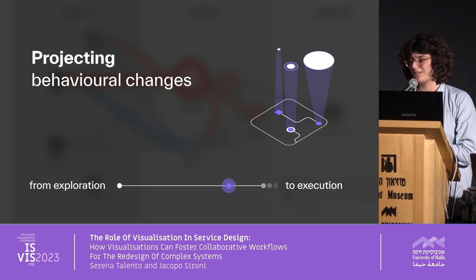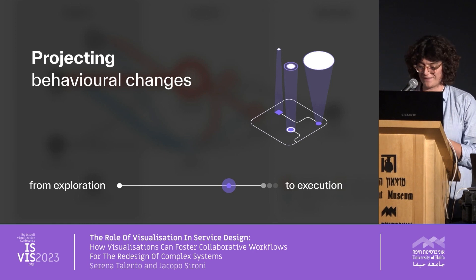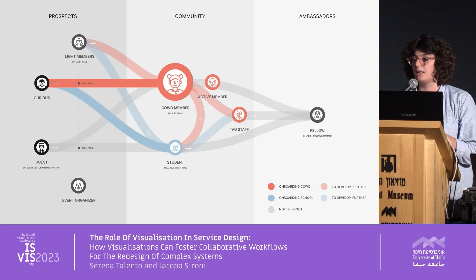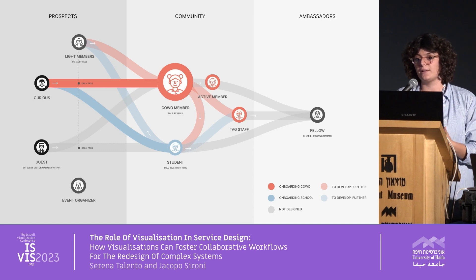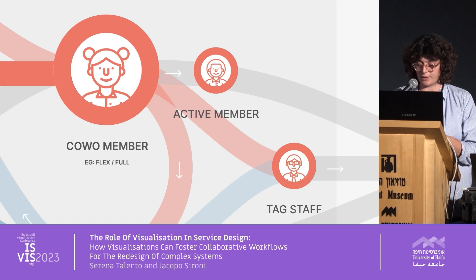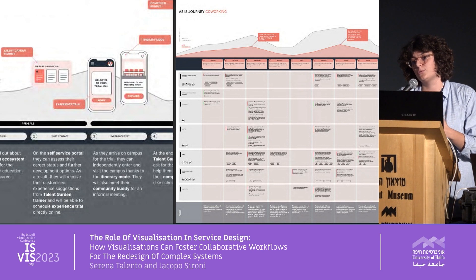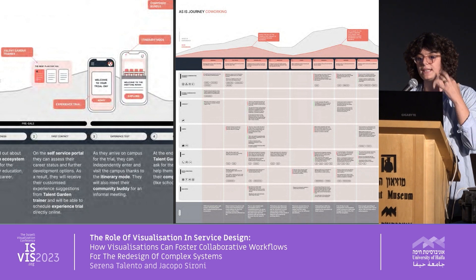Another step forward toward implementation is when we have defined the general service strategy but need to understand how users need to change their behavior to fit the new service. Here, for example, we have a map depicting a learning community, and we can see how students arrive as prospects and can become fellows and experts. The connections are extremely important because they mark key transitions. This map then works as an index for other designers who need to develop the experience of a digital journey — including all the different apps involved in this learning journey and all the technical touchpoints beneath that.